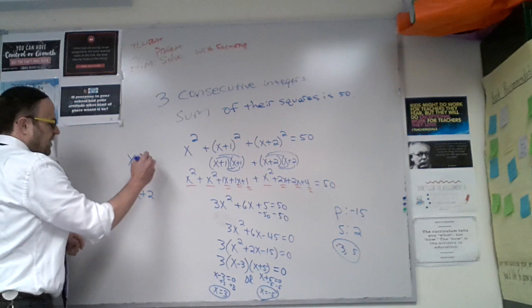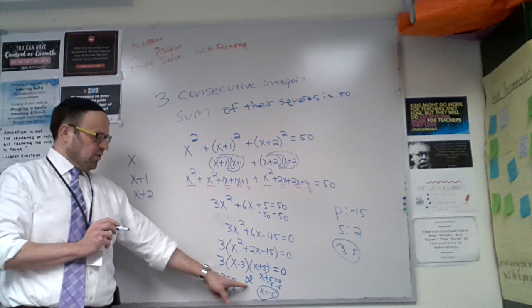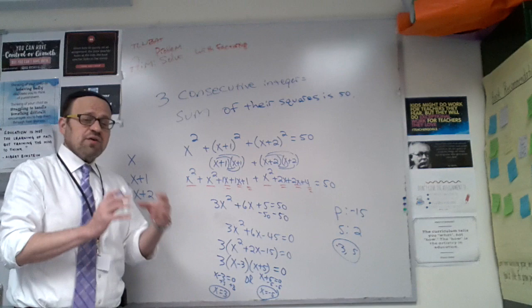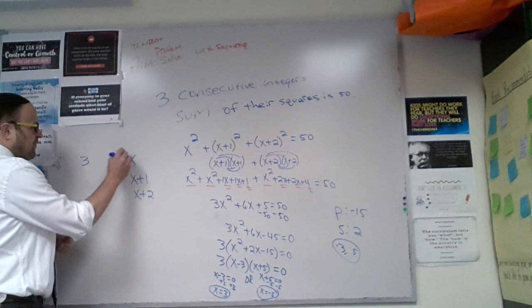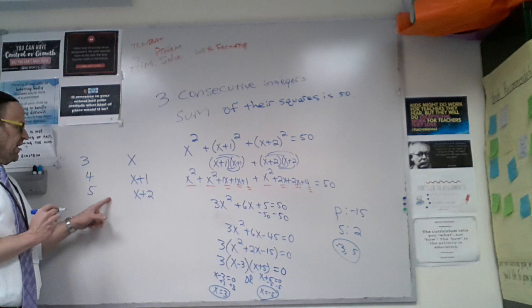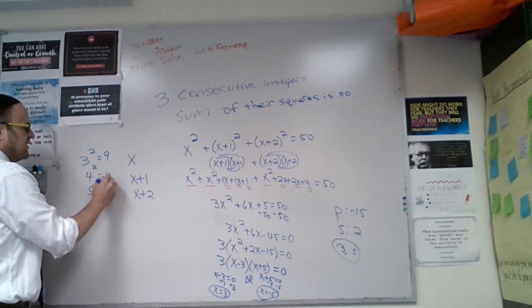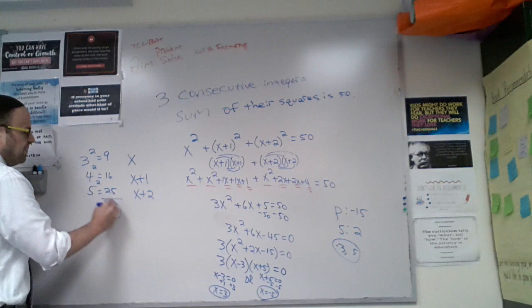Now, let's come back up here. Which could it be? We've been saying or all along. Does that mean that x = 3 or x = -5? Are they both possibilities? Let's take a look at that. Very important. If x is 3, x + 1 is 4, and x + 2 is 5. What's 3²? 9. 4² = 16. 5² = 25. Add them up, you get 50.